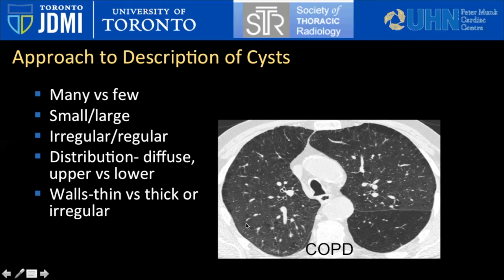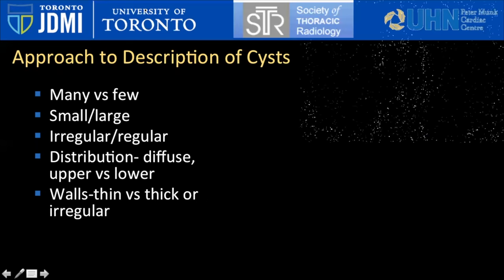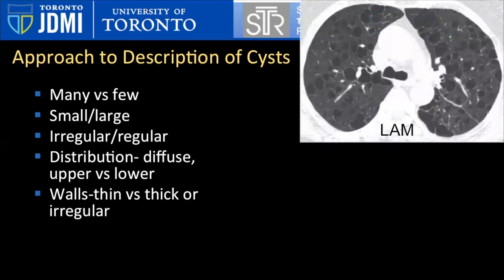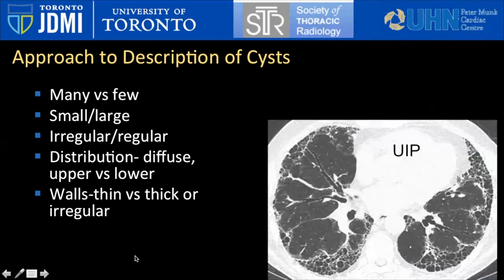Notice also some centrilobular emphysema, typically here in the posterior right upper lobe, as well as panacinar emphysema in the superior segment of the left lower lobe. This is a typical case of LAM: thin-walled, diffuse, very uniform cysts. It's important to describe whether you see few versus many cysts, their size range, distribution, and what the walls look like — thin versus thick or irregular. This is an example of honeycomb cysts associated with a usual interstitial pneumonia (UIP) pattern of lung fibrosis.